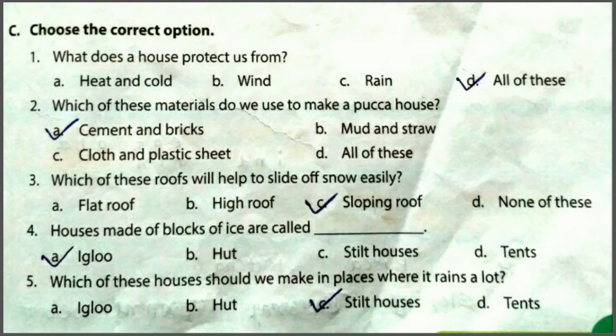Second MCQ: which materials do we use to make a pukka house? Options: A. Cement and Bricks, B. Mud and Straw, C. Cloth and Plastic, D. All of these. तो पका house बनाने के लिए answer is cement and bricks — option A.